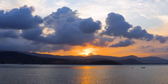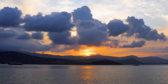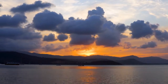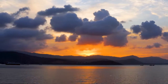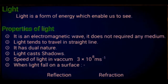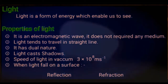First, you should know what is light. Light is a form of energy which enables us to see the objects around us. Next, the properties of light. Number 1: it is an electromagnetic wave. It does not require any medium to travel. Electromagnetic waves are the waves in which both electric and magnetic fields are present.